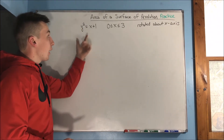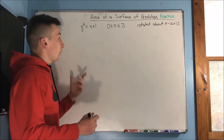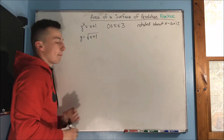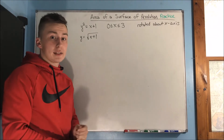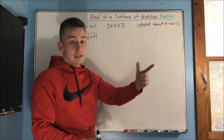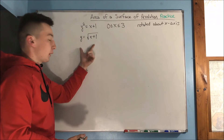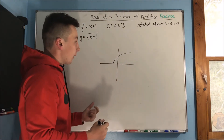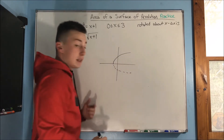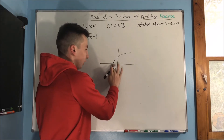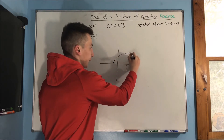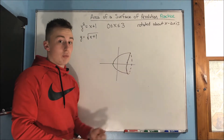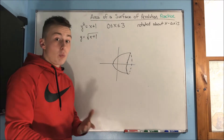First off, we need to solve for y. We have x-bounds, so it's best to take a radical on each side and solve for y, giving us y equals the square root of x plus 1. Why didn't I include a plus or minus? Well, we're rotating about an axis, so it doesn't matter. When we do our rotation about the x-axis, we're already covering where that negative graph was anyway. So there's no difference if we just leave it as radical x plus 1.